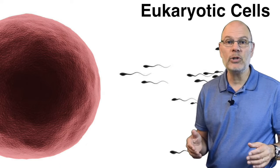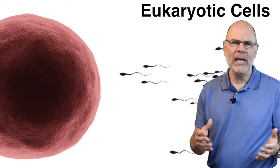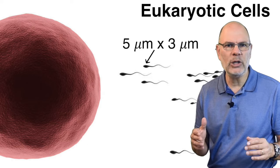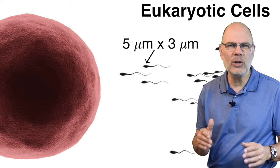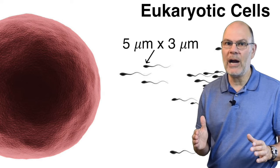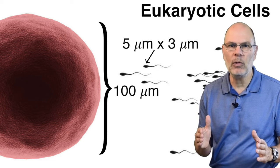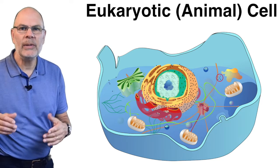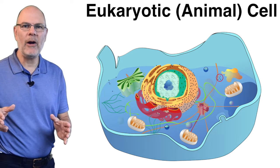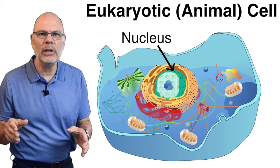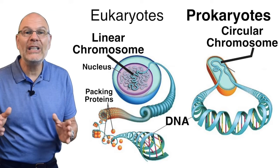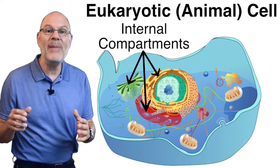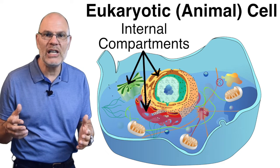Eukaryotic cells, with a few exceptions, are much bigger than prokaryotic cells. Here you can see some sperm cells swimming toward an egg. The head of the sperm is small by eukaryotic standards — about 5 micrometers by 3 micrometers. The egg is big by eukaryotic standards, at about 100 micrometers. This diagram represents an animal cell. There's a distinct membrane-bound nucleus surrounding the chromosomes. The chromosomes are linear, as opposed to the circular chromosomes found in bacteria. Eukaryotes have many membrane-bound internal compartments where specialized functions occur.